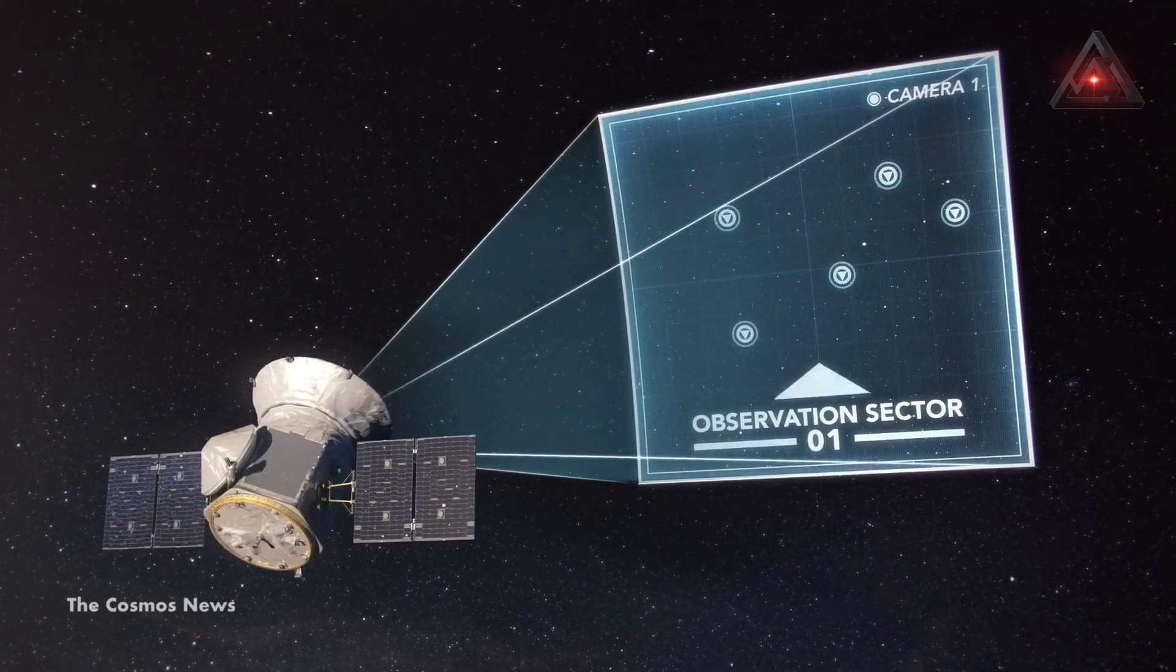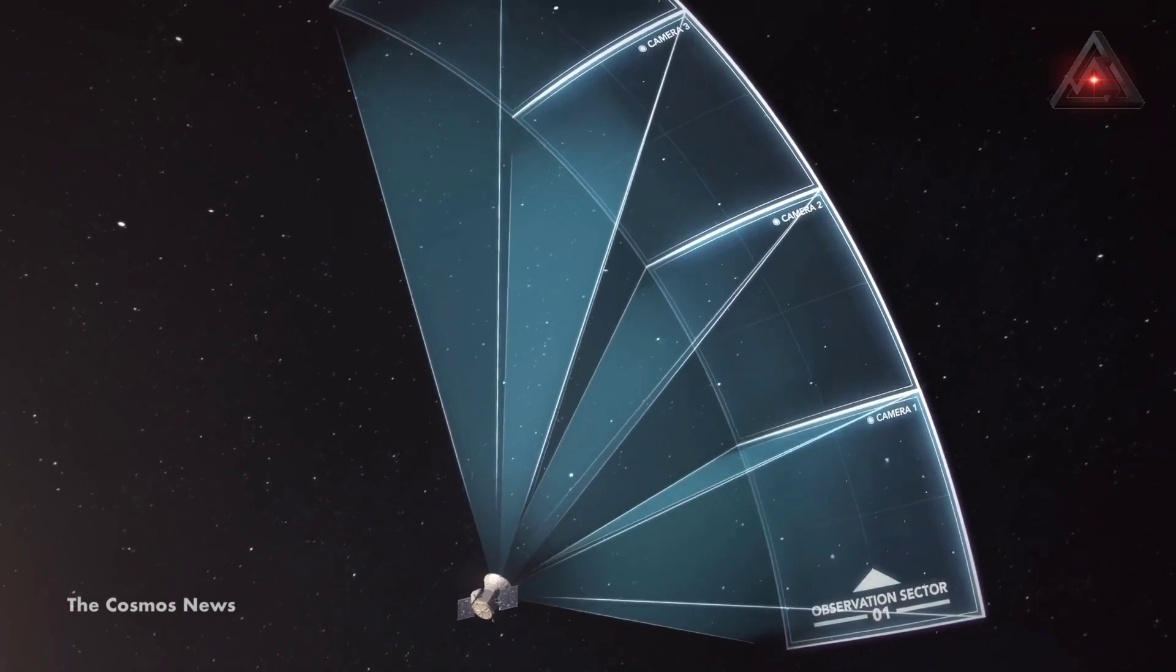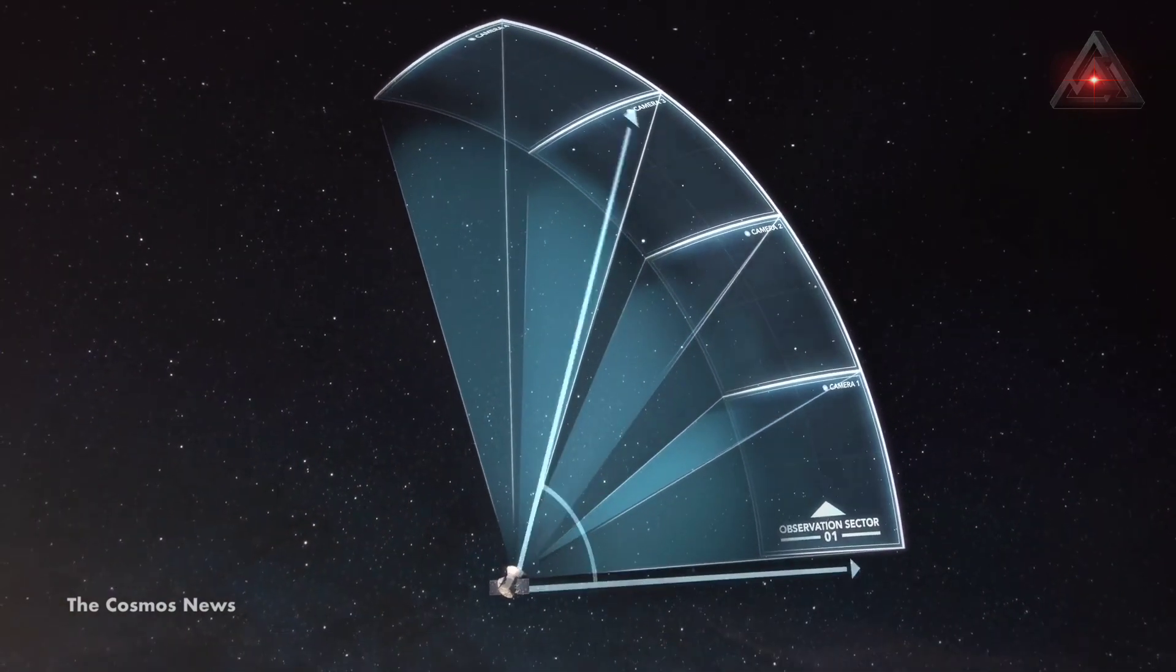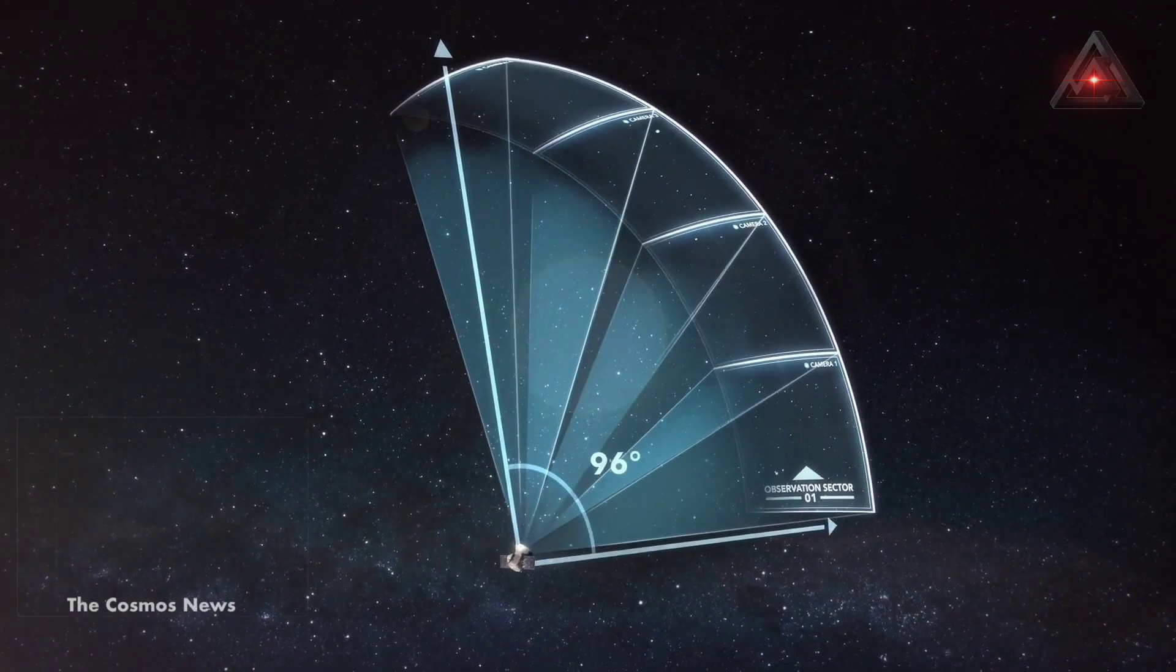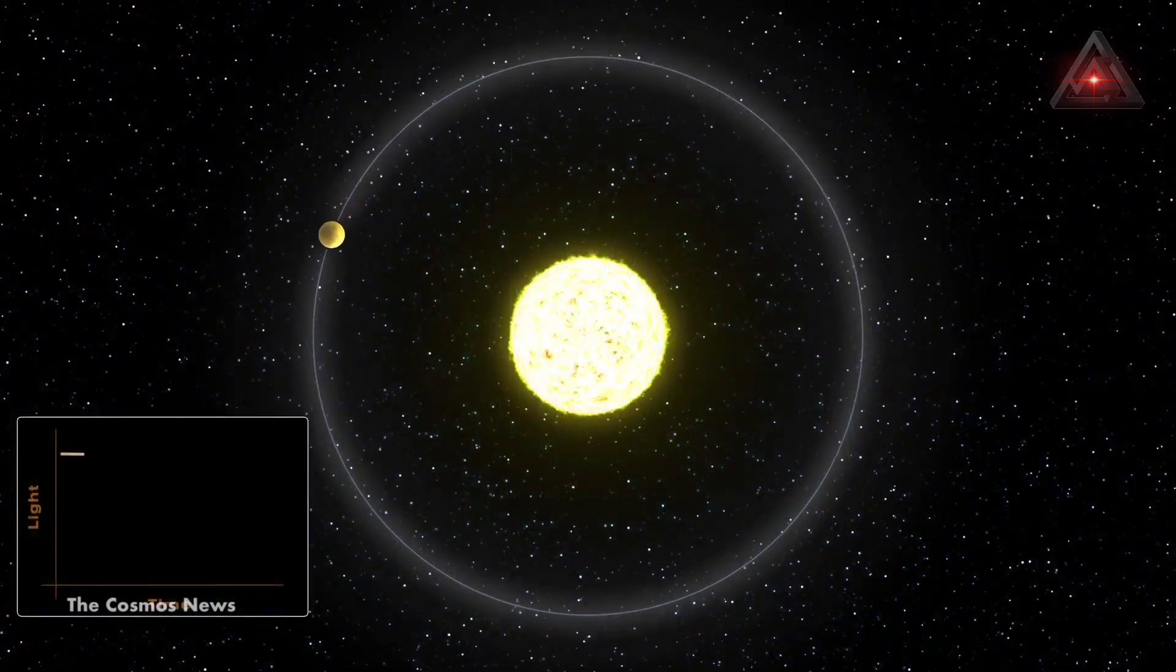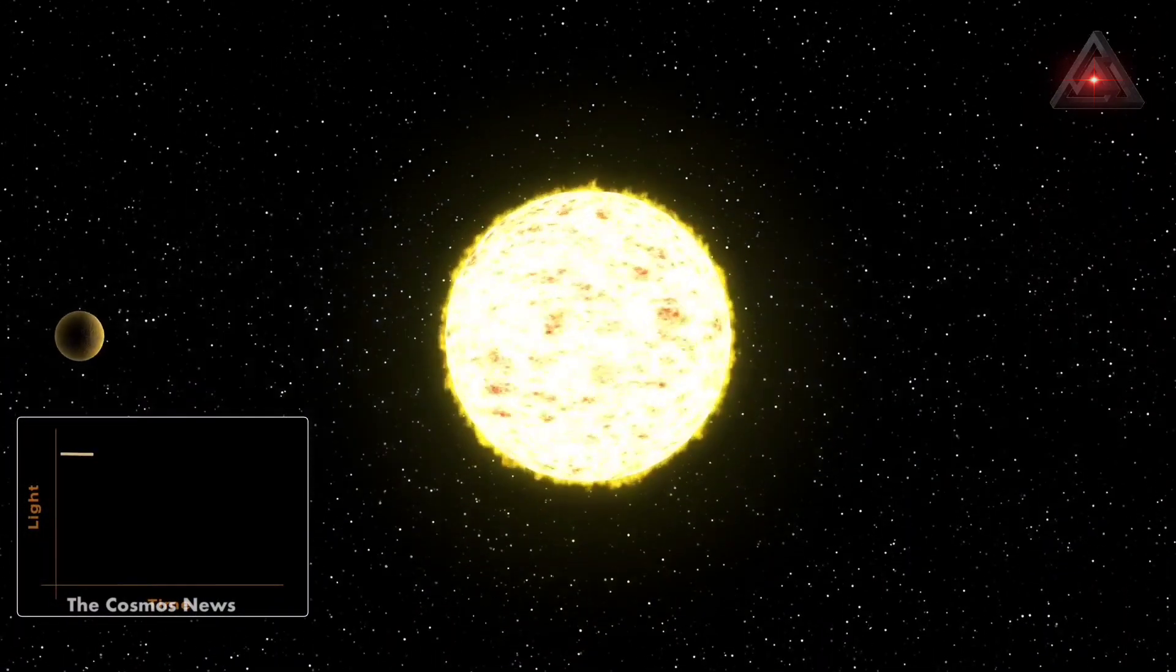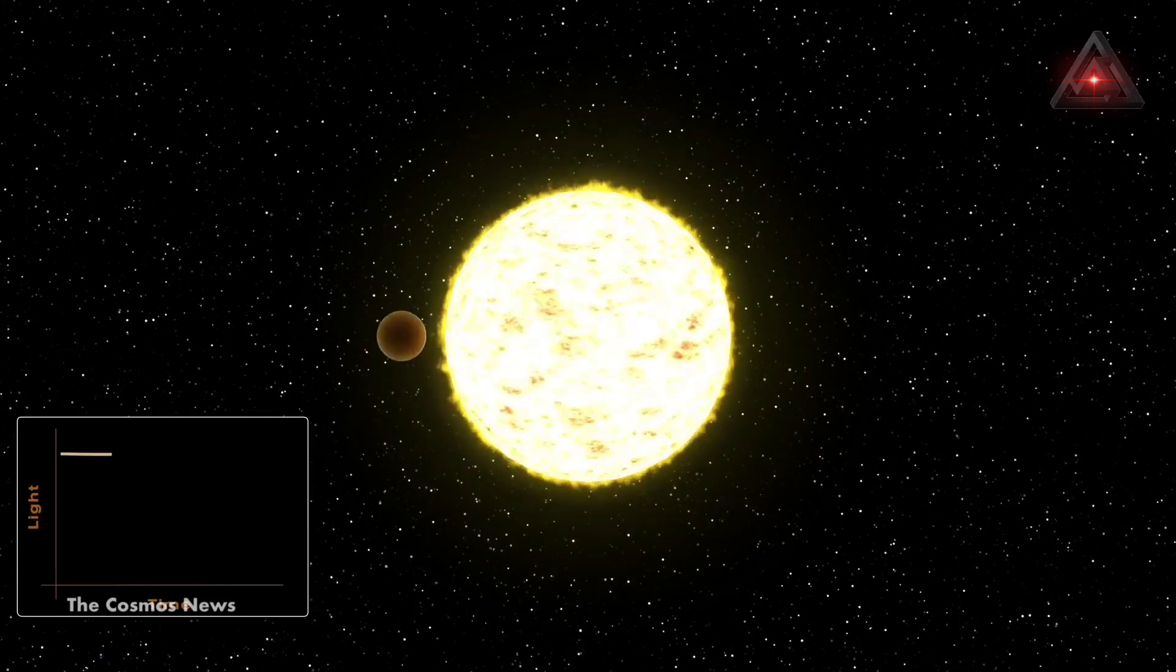The TESS mission, launched in 2018, monitors large portions of the night sky for 27 days at a time, staring at the brightest stars and tracking their changes in brightness. These dips in luminosity indicate orbiting planets as they pass in front of their stars, called transits.